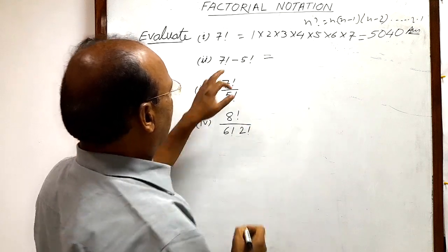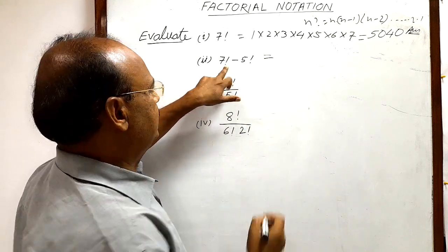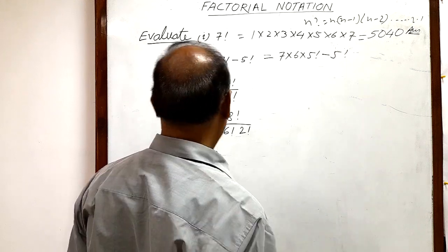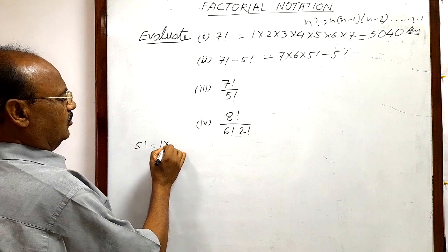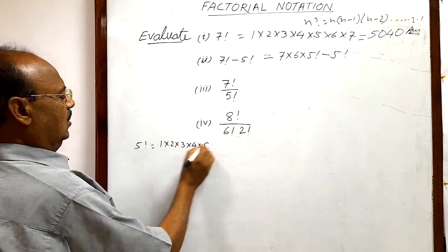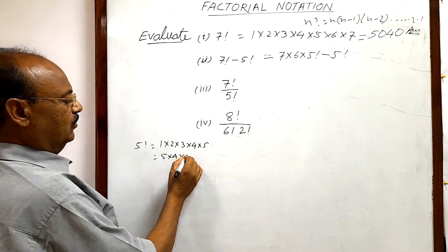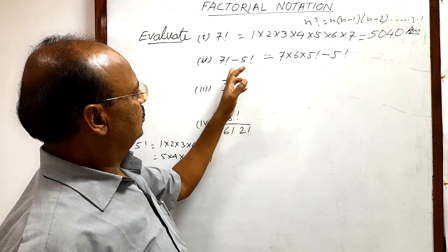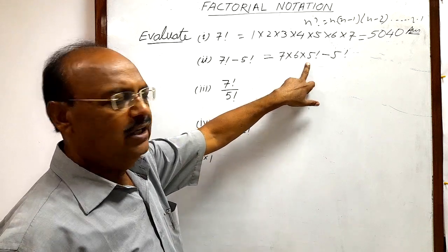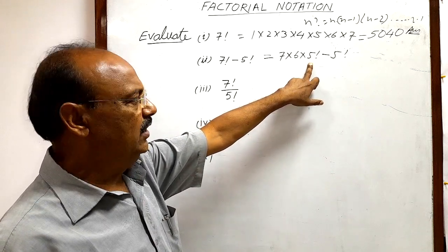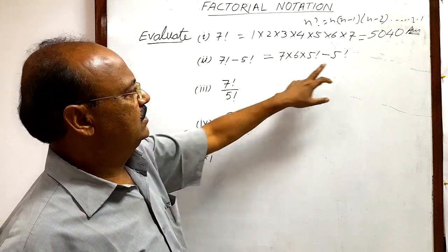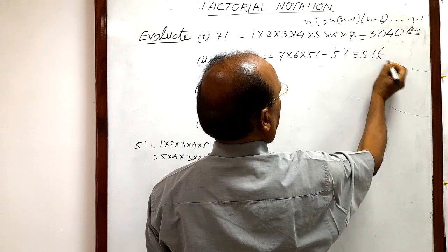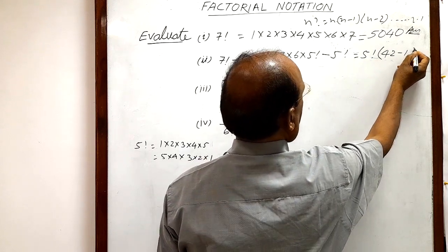The second question is 7! − 5!. We write 7! as 7 × 6 × 5!, so the expression becomes 7 × 6 × 5! − 5!. Note that 5! can be written as either 1 × 2 × 3 × 4 × 5 or in descending order 5 × 4 × 3 × 2 × 1. We can now take 5! as a common factor, giving us 5! × (7 × 6 − 1), which is 5! × (42 − 1).